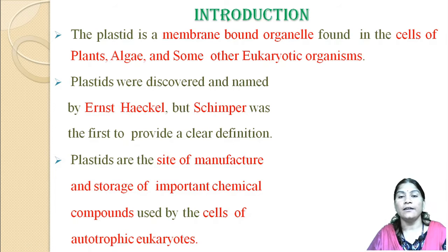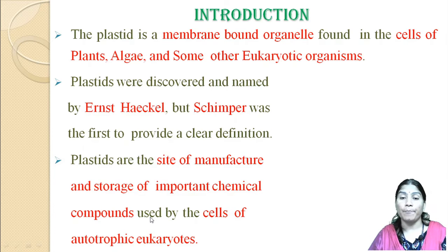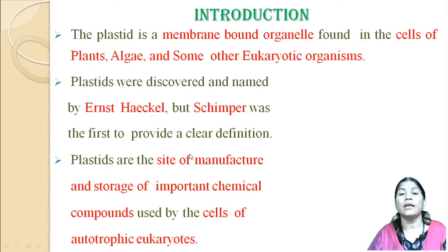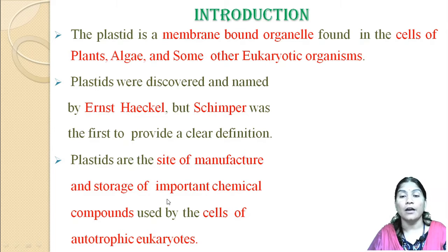Plastids are the sites of manufacture and storage of important chemical compounds which are used in the cells of autotrophic eukaryotes. Autotrophs are those plants which prepare their own food material. So plastids are the sites of manufacture and storage of different chemical compounds used for the process of photosynthesis.